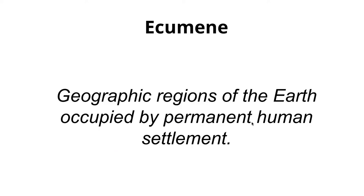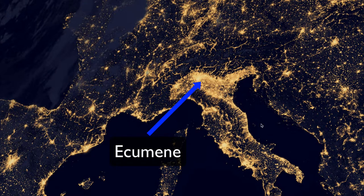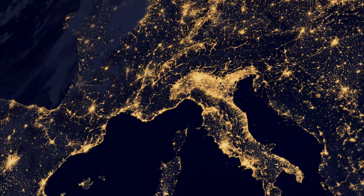Ecumene refers to the geographic regions of the earth that are occupied by people, or the areas of the earth that we can actually settle on. As you can tell from this map, not every area on earth is inhabited by people, but the areas that are are called the ecumene.